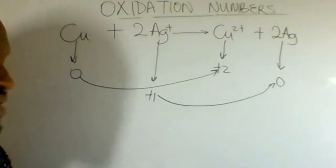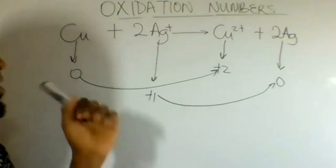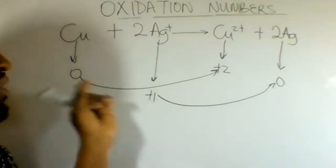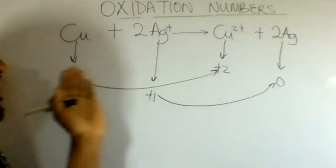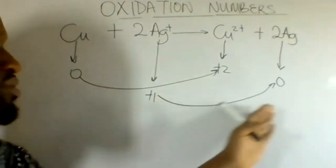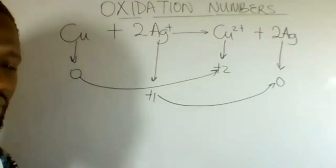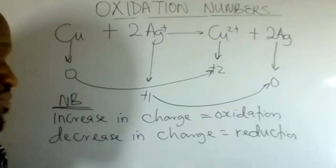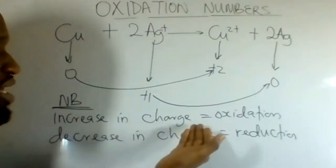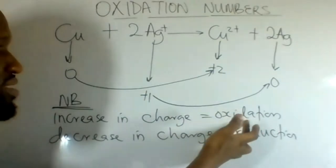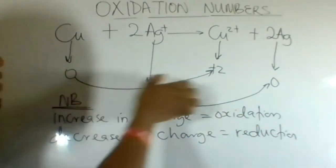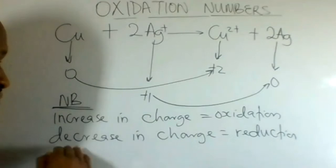In order to determine oxidation numbers, check for the transition from zero to plus two for copper, and plus one to zero for silver. It is important to note that an increase in charge is oxidation. Therefore, copper increased from zero to plus two — that is oxidation.